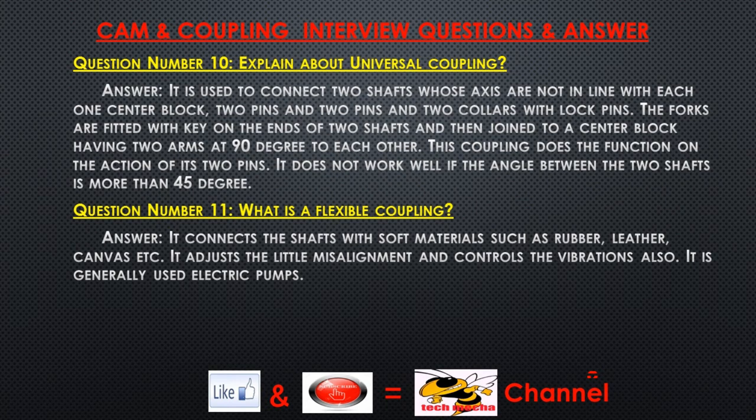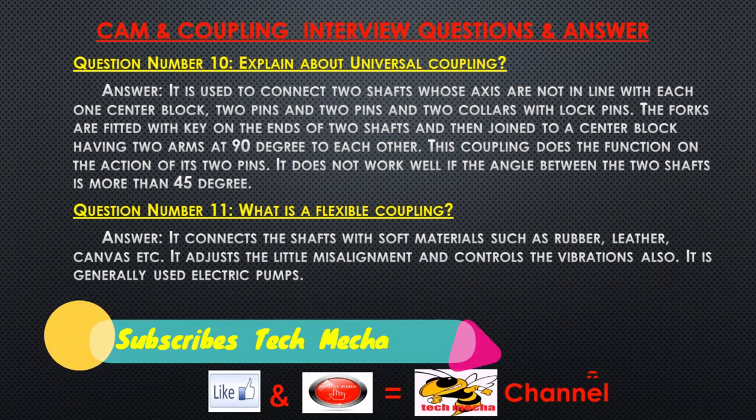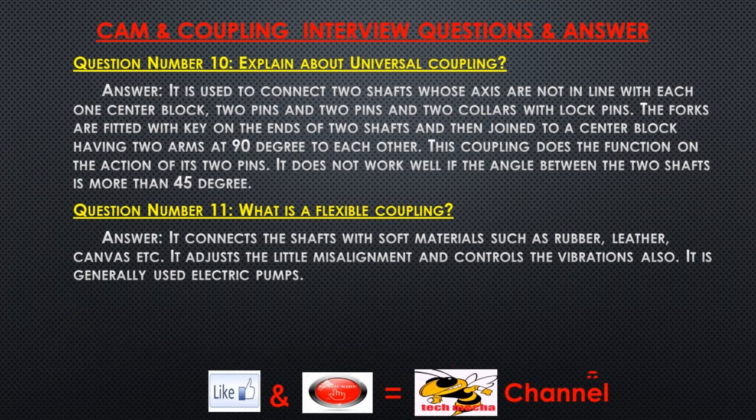Question number ten: Explain about universal coupling. Answer: It is used to connect two shafts whose axes are not in line with each other. It consists of one center block, two pins, and two collars with lock pins. The forks are fitted with a key on the ends of the two shafts and then joined to a center block having two arms at 90 degrees to each other. This coupling does not work well if the angle between the two shafts is more than 45 degrees.